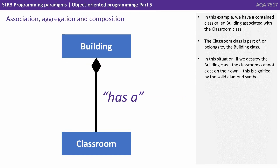In this example, we have a contained class called building associated with the classroom class. The classroom class is part of or belongs to the building class. In this situation, if we destroy the building class, the classrooms cannot exist on their own. This is signified by the solid diamond symbol.